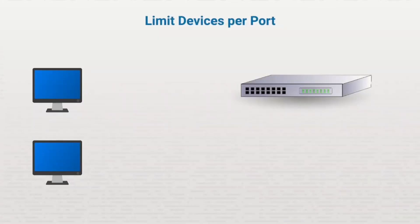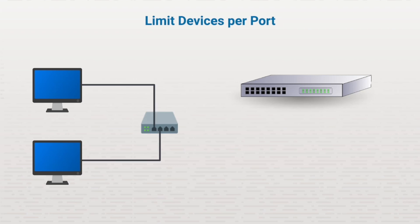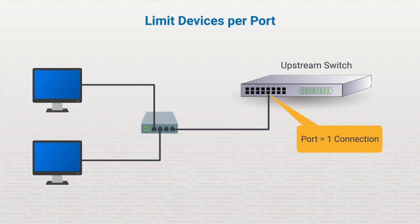Since organizations face constant battles with finding open switch connections in a growing workforce, one solution is to add an intermediate switch. A small switch is placed in a small office that allows several connections, and then that switch is connected to the upstream switch. If the number of devices is limited on the upstream switch and set to one, only the first device that tries to connect is allowed. When the second device tries to connect, the switch denies the connection, and the second device won't connect to the network.